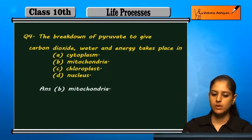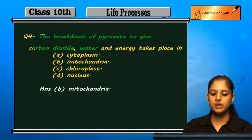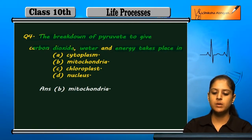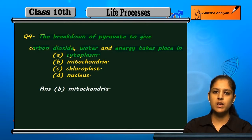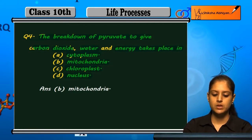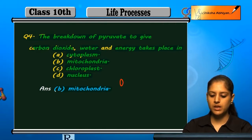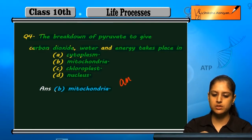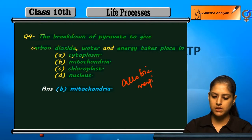Question 4: The breakdown of pyruvate to give carbon dioxide, water, and energy takes place in the mitochondria. This breakdown is part of aerobic respiration.